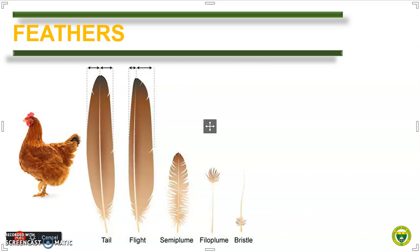Bristle feathers are very stiff with only a few barbs found at the base. They are found around the mouth of insect-eating birds where they act as a funnel. They can also be found around the eyes where they work like eyelashes.